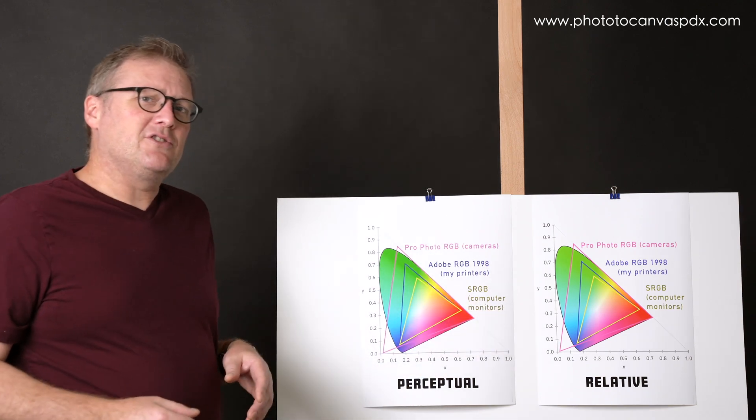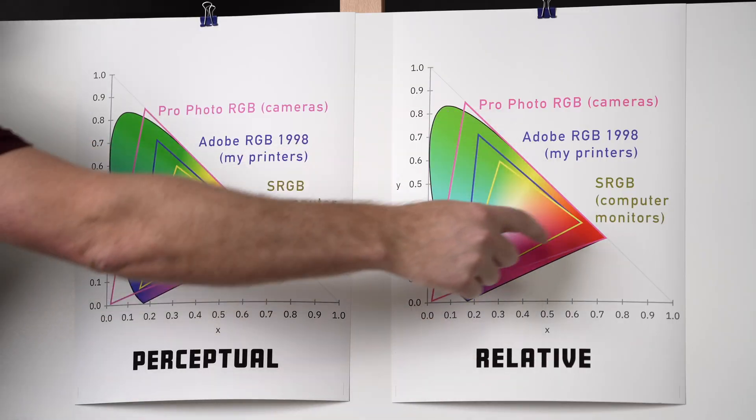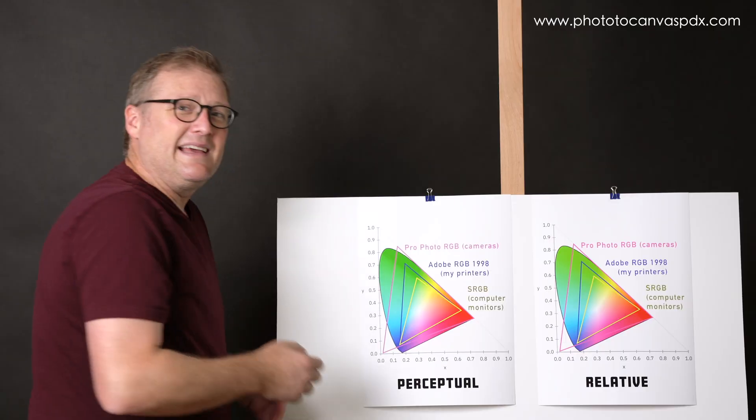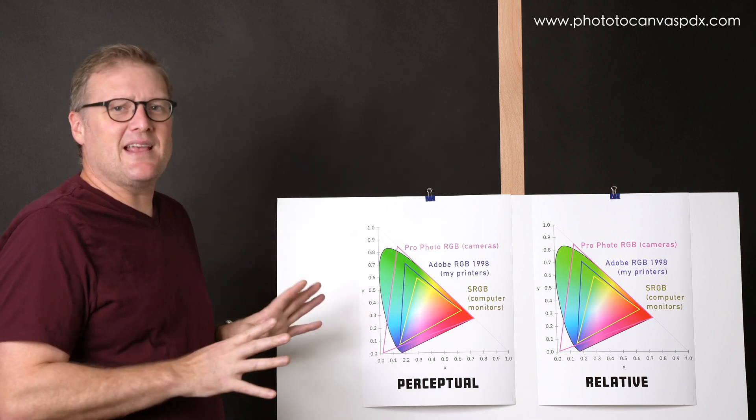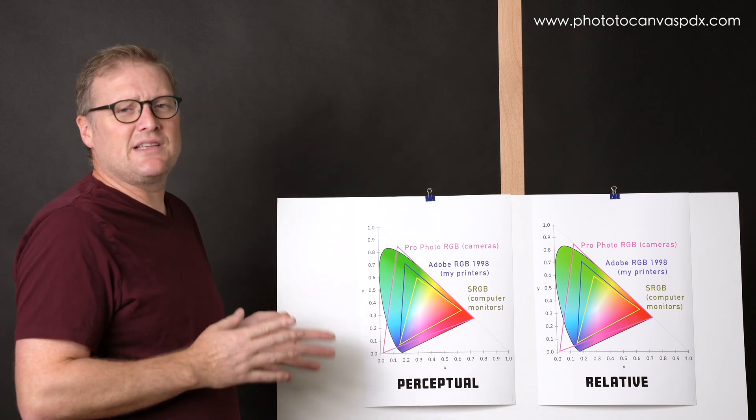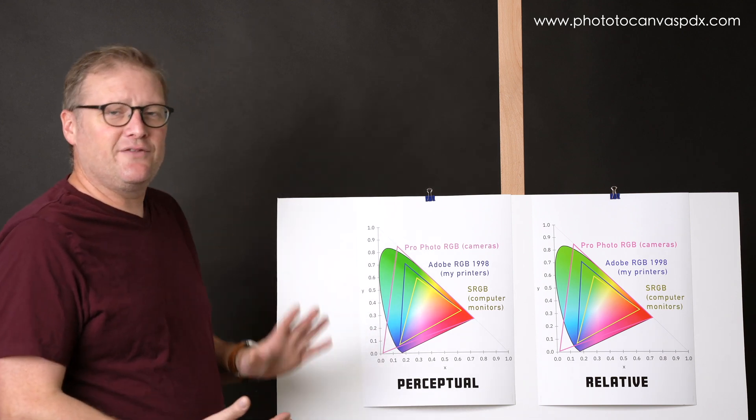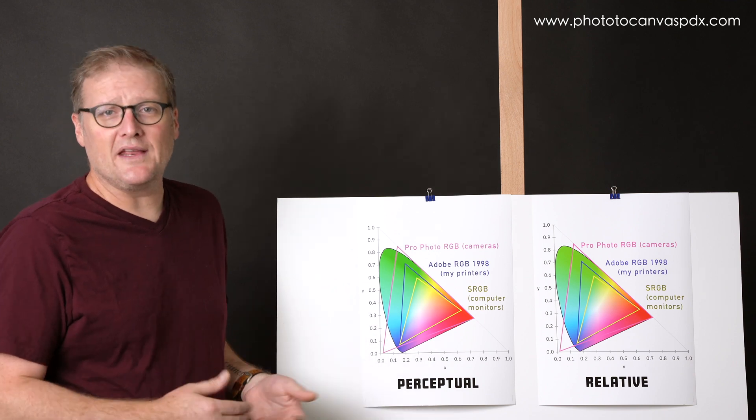So relative colorimetric, everything within the triangle here is going to stay the same, and the colors outside of that gamut are going to get shifted to the nearest color within gamut.